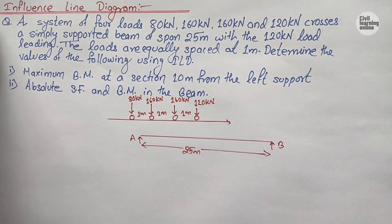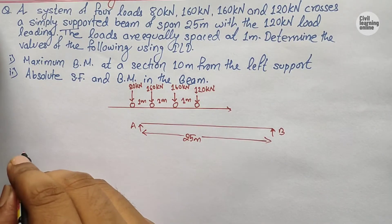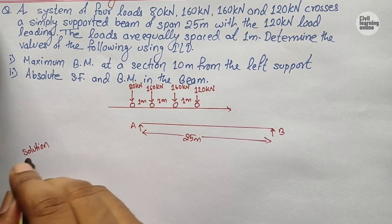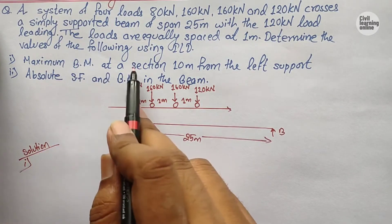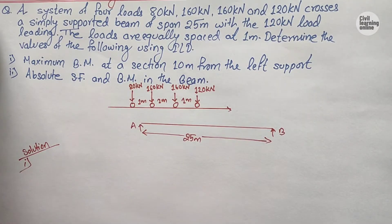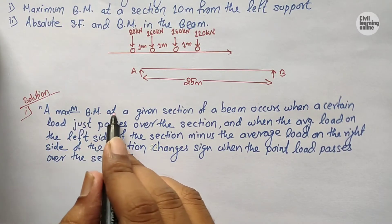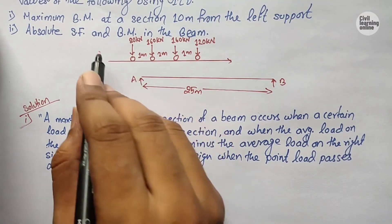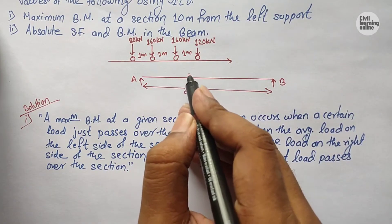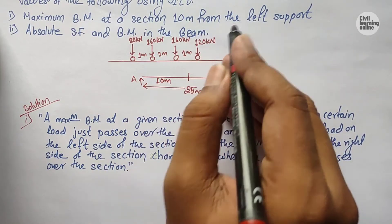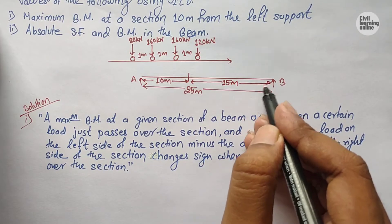Now let us solve the first question. We are asked to find the maximum bending moment at a section 10 meters from the left support. The total span is 25 meters, so the section C is at 10 meters from A, leaving 15 meters on the right side. We will find the maximum bending moment at this point C.